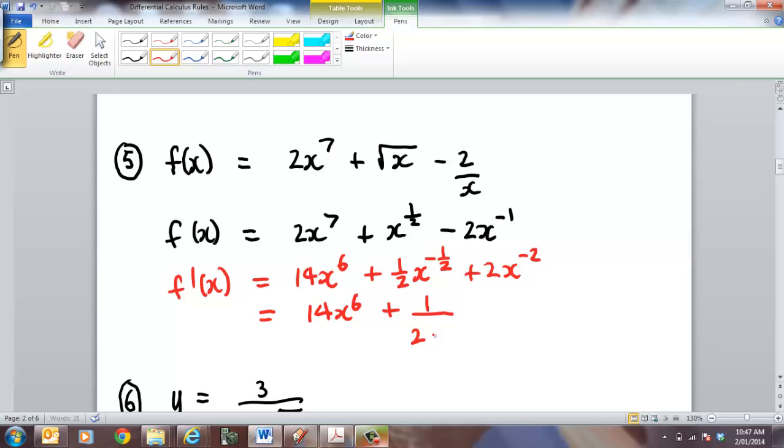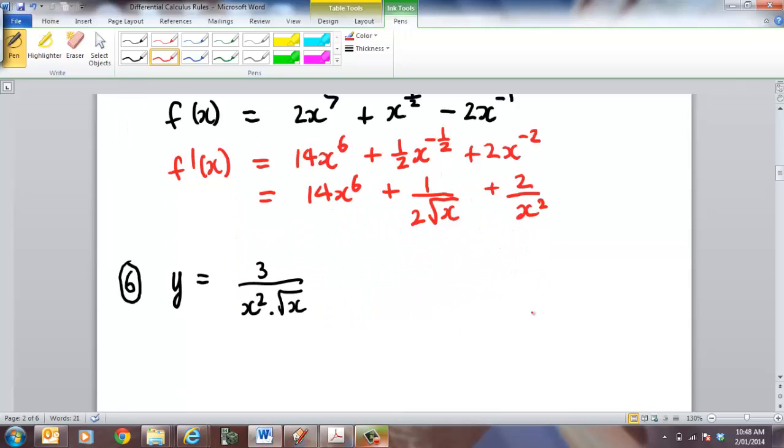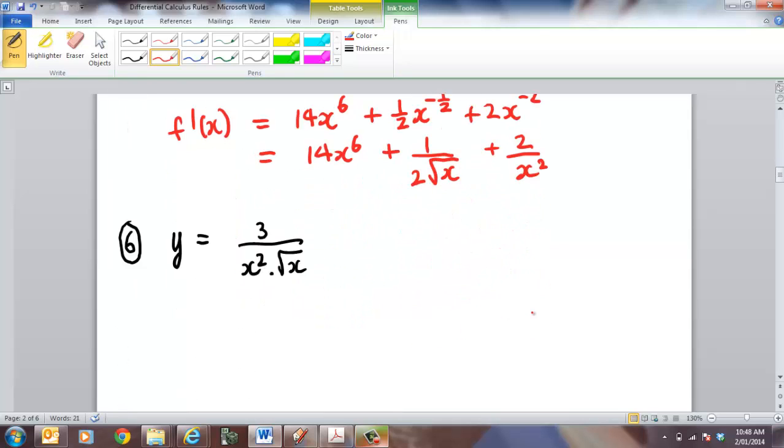And if you do that, that becomes, well that's still going to be a third. Bring the 2 down the bottom line. And that's going to be a half to x to the power of a half which is square root of x plus 2 over x squared. I hope you can see that if you can't, don't panic. Not at the end of the world. You'll get used to using that sort of terminology.